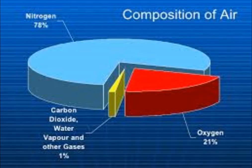Composition of Air: Air is a mixture of several gases. 78% of it is nitrogen, and 21% of it is oxygen. The rest of it is other gases such as carbon dioxide, argon, helium, hydrogen, etc.